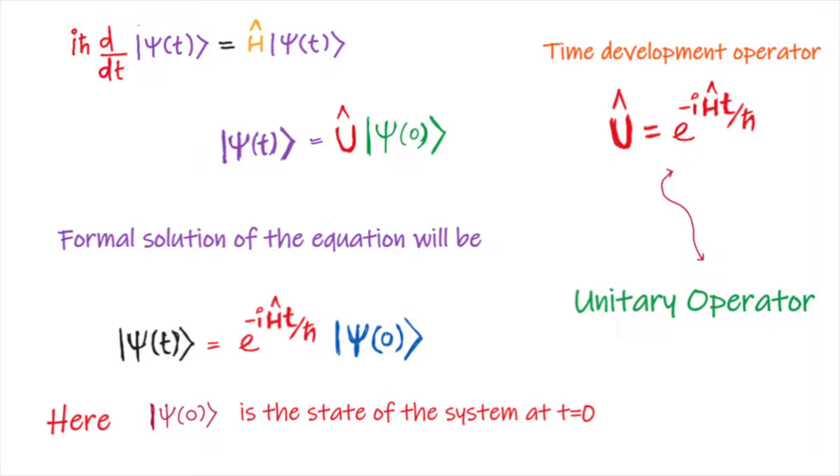Suppose we have a system where Hamiltonian is independent of time. If the Hamiltonian is independent of time, then the form of time evolution operator would be U = e^(-iĤt/ℏ), where Ĥ is the Hamiltonian operator and this operator represents a finite time translation. We have to note that this time development operator is unitary in nature.